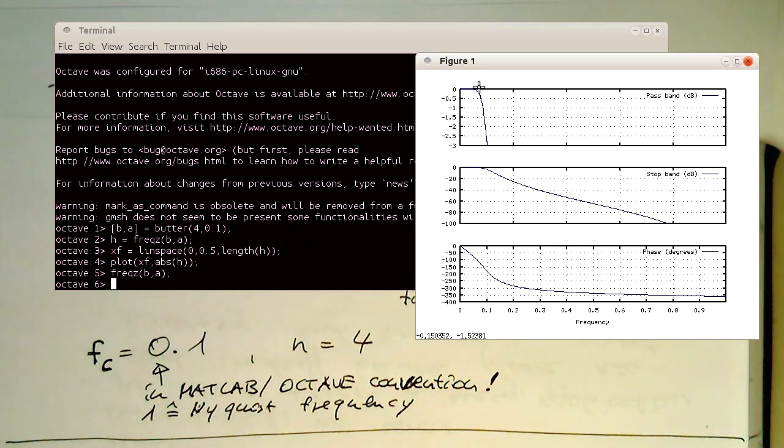And so the pass band is generated here. Then the reaction in the stop band here at 0.1 and then the phase here. So we see now in this here, if we use this command in this way, the Nyquist frequency is indeed 1.